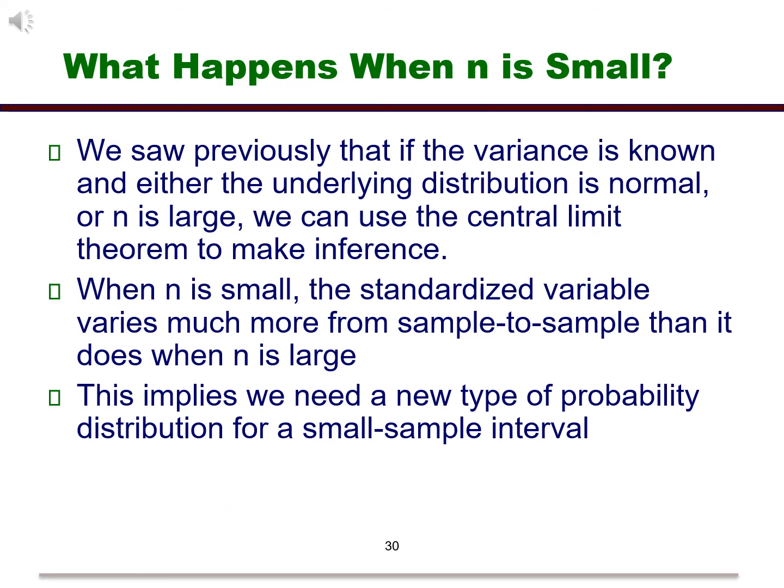Everything that we've talked about up to this point has worked because of the central limit theorem. What is the consequence if this does not hold? When n is small, the standardized variable varies much more from sample to sample than it does when n is large. This implies that we need a new type of probability distribution for a small sample interval. For this situation, we will use the t distribution.